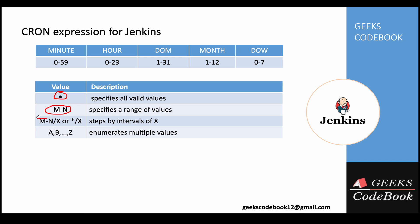You can also define an interval using a forward slash followed by a number, which defines the interval. We'll see examples of this in the demo. You can also define specific values using a comma — for example, 2 comma 3 means 2 and 3, not a range. If you say 2 comma 3 comma 5, that means 2, 3, and 5.